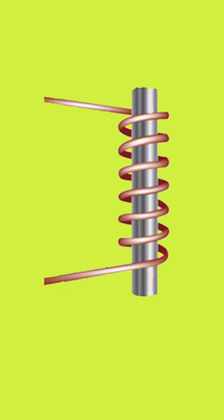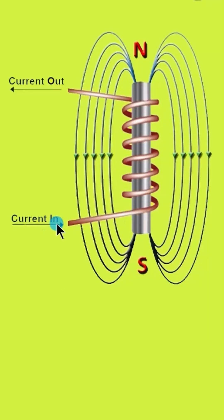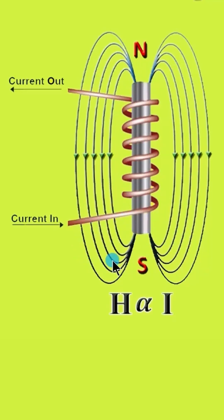Consider a core which is not magnetized, placed inside a coil. When no current is passing through the coil, there will not be any magnetism. But when we pass current through the coil, a magnetic field is produced and it magnetizes the iron bar. That magnetization force H is proportional to the current we are passing through the coil.